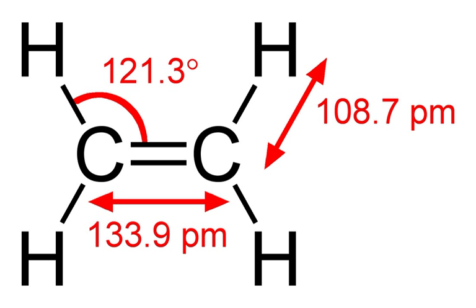Ethylene has been used since the ancient Egyptians, who would gash figs in order to stimulate ripening. Wounding stimulates ethylene production by plant tissues. The ancient Chinese would burn incense in closed rooms to enhance the ripening of pears. In 1864, it was discovered that gas leaks from street lights led to stunting of growth, twisting of plants, and abnormal thickening of stems. In 1901, a Russian scientist named Dmitry Neljubow showed that the active component was ethylene.